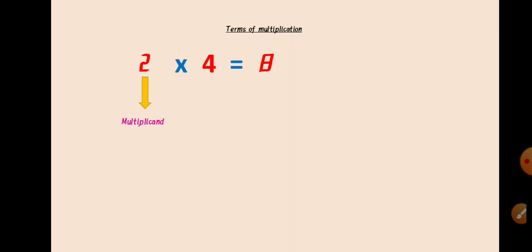Now, the second number is called the multiplier. Multiplier means a quantity by which a given number is to be multiplied. The number which we get after the multiplication is called the product. This is the result of multiplication.